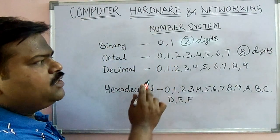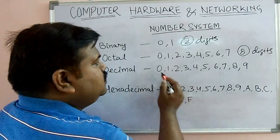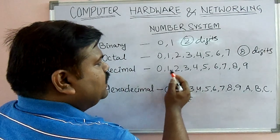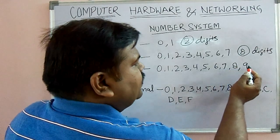In decimal number system there are ten digits: zero, one, two, three, four, five, six, seven, eight, nine. Ten digits.